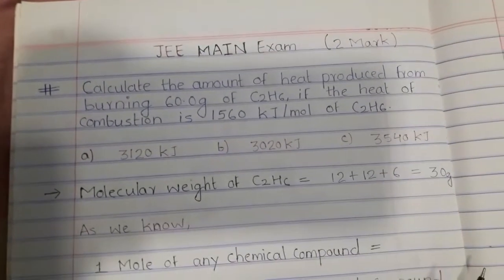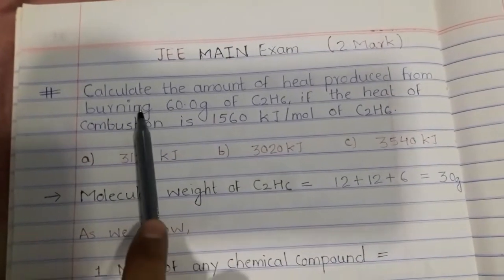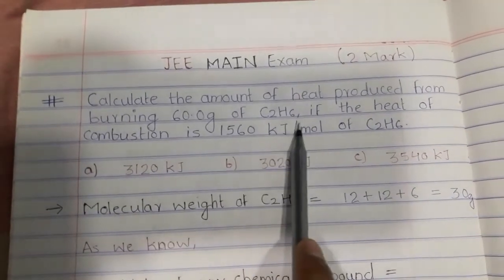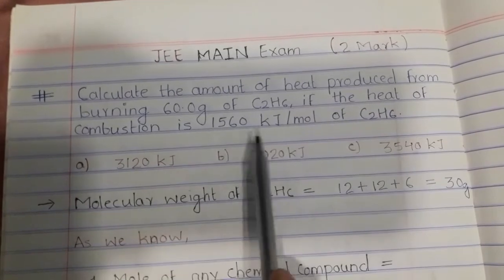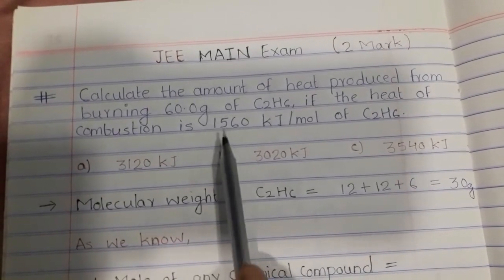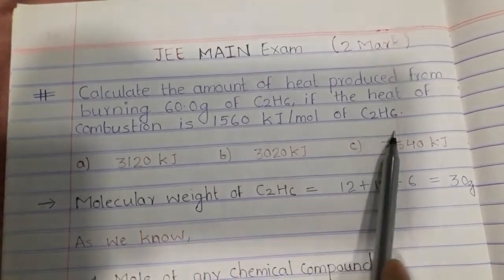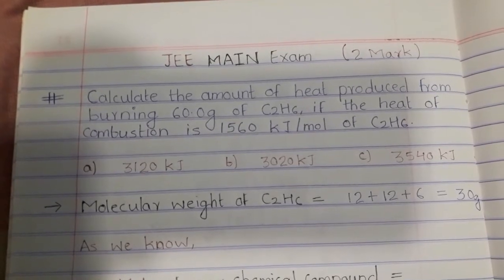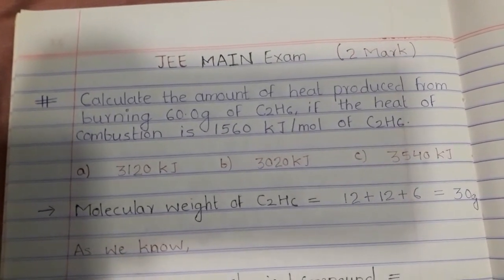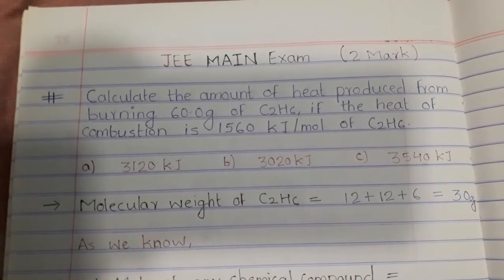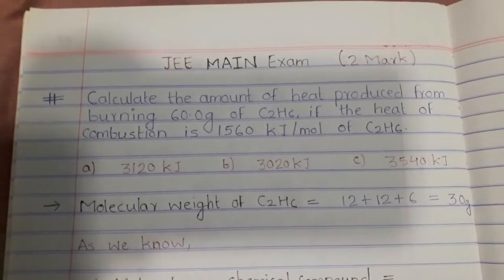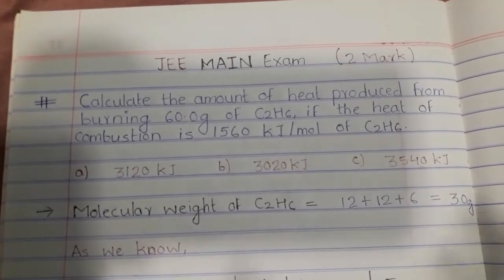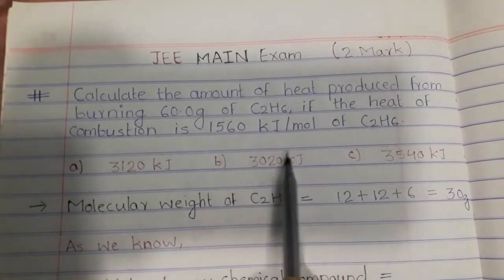So let's start with the question. The question is: calculate the amount of heat produced from burning 60 grams of C2H6, if the heat of combustion is 1560 kJ per mole of C2H6. So we have to calculate the amount of heat produced. If we use 1 mole of ethanol to burn, then the amount of heat produced will be 1560 kJ.